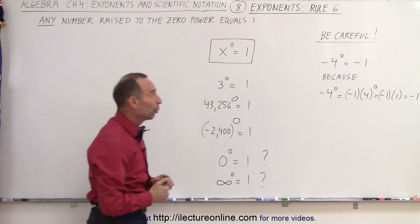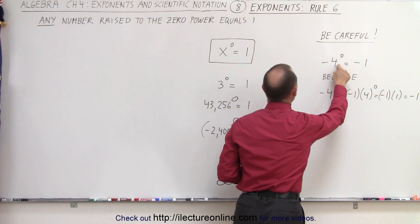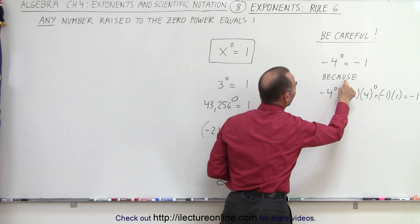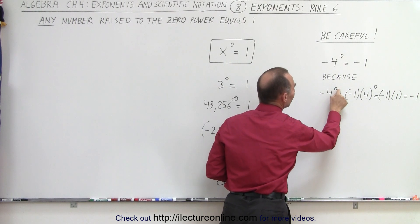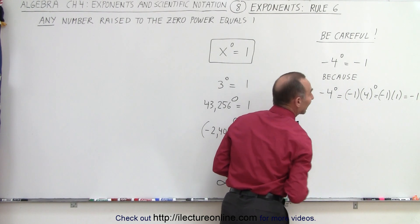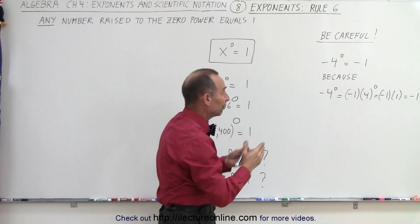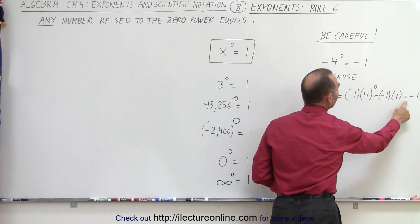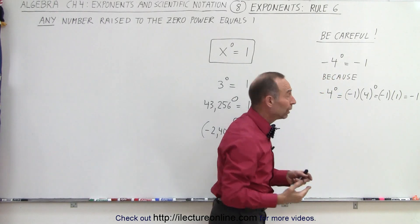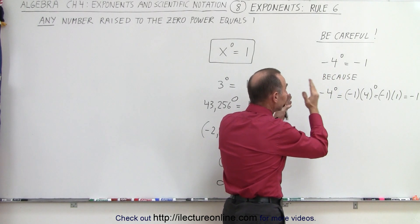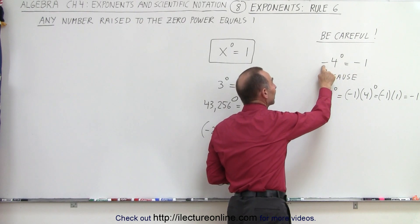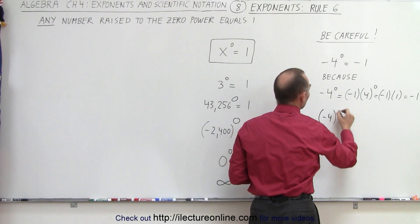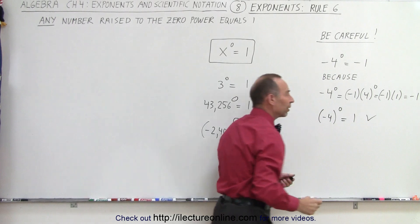Now we have to be careful. What about negative 4 to the 0 written like this instead of written like this? And then it is not equal to 1. It is equal to negative 1 because negative 4 to the 0 power, the 0 power only applies to the 4, not to the negative in front of it. The negative in front can be thought of as a negative 1. And so notice that 4 to the 0 power is 1, but then you still have the negative in front, so this becomes negative 1. So it doesn't violate the rule. It just means that if you don't write parentheses around it, then you do not include the negative sign as being affected by the exponent. If you want it to be, then you write negative 4 to the 0 power, and that is equal to 1, and that's how you then have to write it.